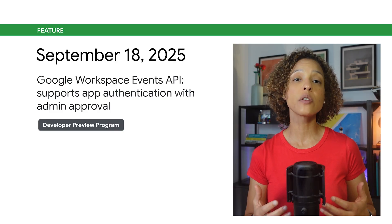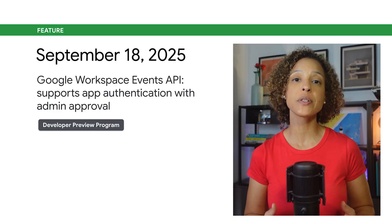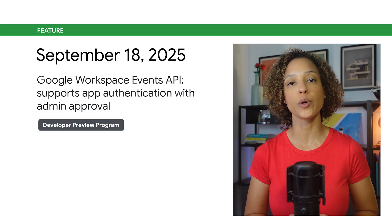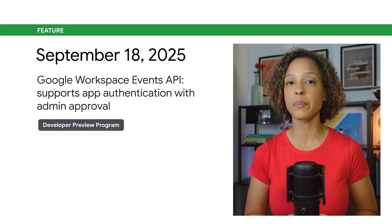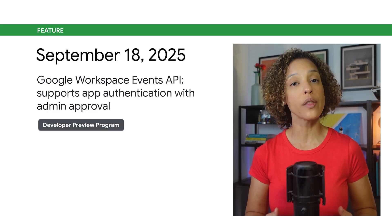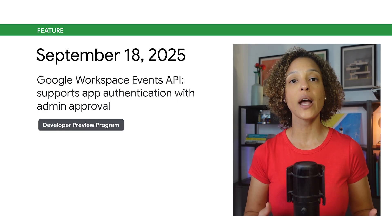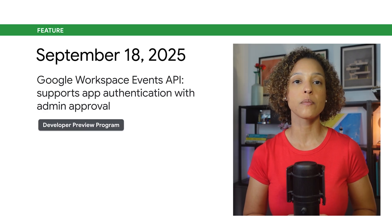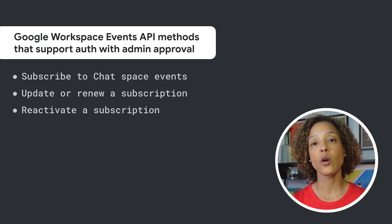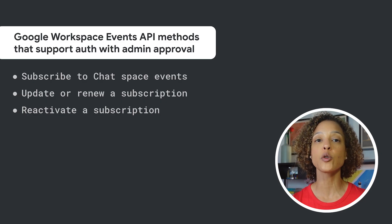Also available through the Developer Preview program, Chat Apps can now call some methods in the Google Workspace Events API using app authentication with administrator approval with chat.app authorization scopes. These methods are: subscribe to chat space events, update or renew a subscription, and reactivate a subscription.